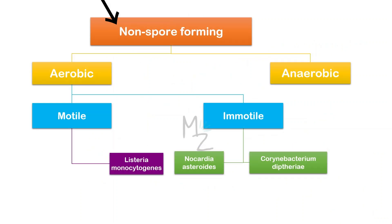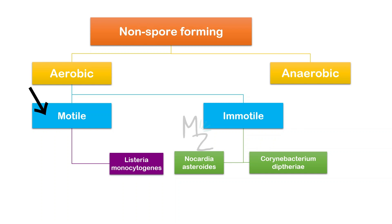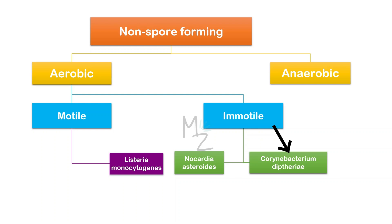Non-sporeforming bacteria are also classified differently. If they are not filamentous, they will be aerobic or anaerobic. Aerobic are further classified into motile and non-motile. The motile is further subdivided into Listeria monocytogenes, and the non-motile includes Nocardia asteroides and Corynebacterium diphtheriae.